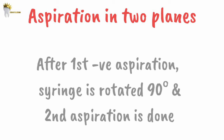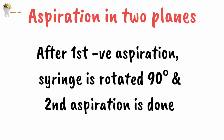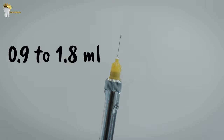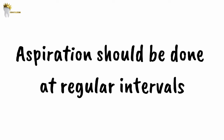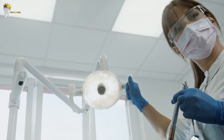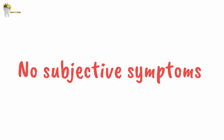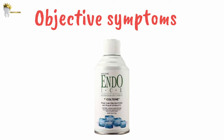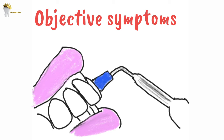At the proper depth, aspiration is done in two planes: after the first aspiration is negative, rotate the syringe barrel 90 degrees and aspirate again. If both are negative, slowly deposit 0.9 to 1.8 ml of solution over 30 to 60 seconds, aspirating at regular intervals during deposition to avoid injecting into a blood vessel. After deposition, slowly withdraw the syringe and wait three to five minutes before starting the dental procedure. Since there are no subjective symptoms, anesthesia can be verified using a freezing spray like Endo-Ice or an electric pulp test, which should show no response.